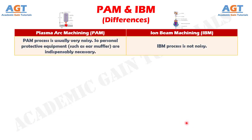Number 10: plasma arc machining process is usually very noisy, so personal protective equipment such as ear mufflers are indispensably necessary. Whereas iron beam machining process is not noisy.